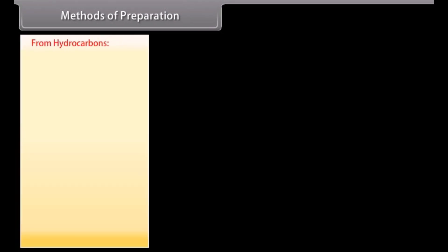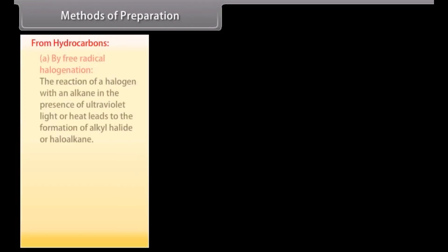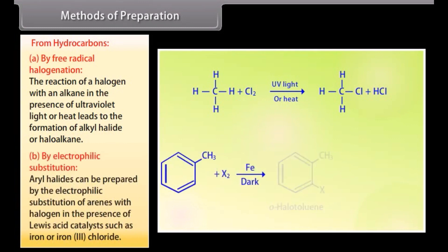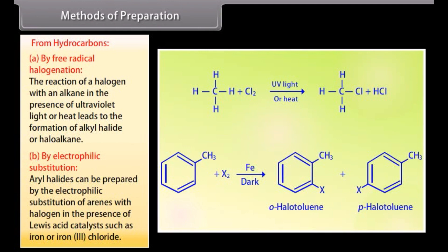From hydrocarbons: By free radical halogenation, the reaction of a halogen with an alkane in the presence of ultraviolet light or heat leads to the formation of an alkyl halide or haloalkane. By electrophilic substitution, aryl halides can be prepared by the electrophilic substitution of arenes with halogen in the presence of Lewis acid catalysts such as iron or iron(III) chloride.